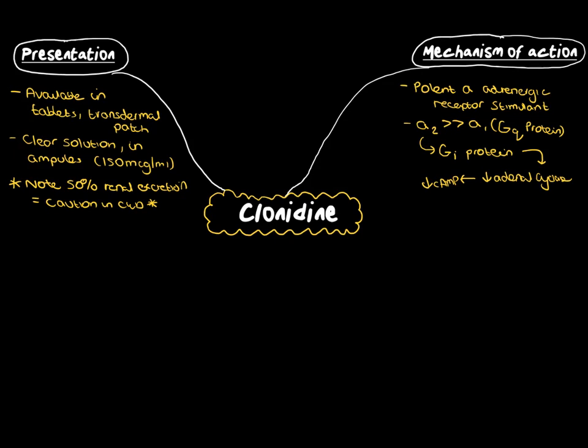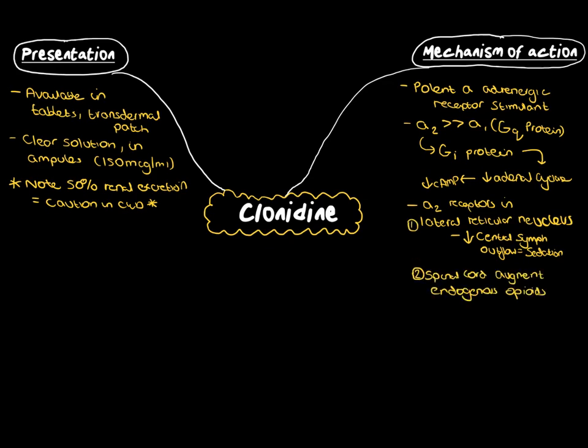The alpha-2 receptors that clonidine typically interacts with are found in the lateral reticular nucleus, and when affected, they predominantly lead to a decrease in central sympathetic outflow and sedation effects. They are also found in the spinal cord, where they augment the release of endogenous opiates within the circulation.